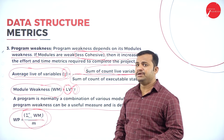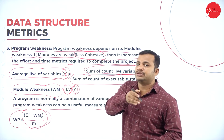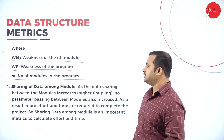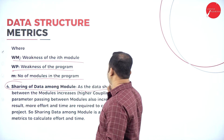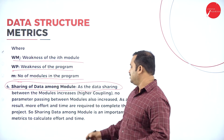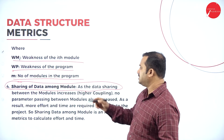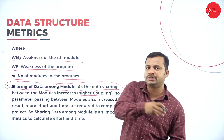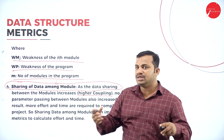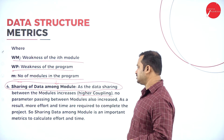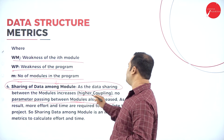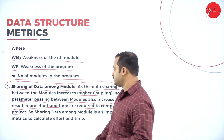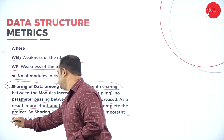When there is more coupling — meaning there is easy flow of data from one module to another — then the modules are strong and it is not a weakness of the program. Sharing of data among modules — if any data is shared from one module to another, that is called coupling, which means interdependency. As parameter passing between modules increases, less effort and time are required to complete the project. Sharing data among modules is an important metric to calculate effort and time.